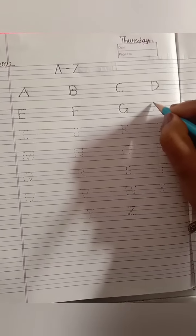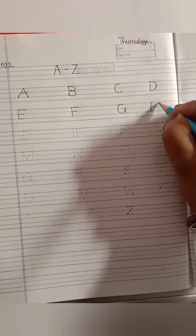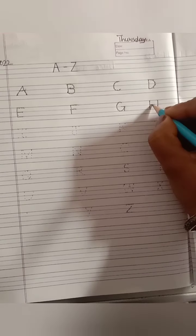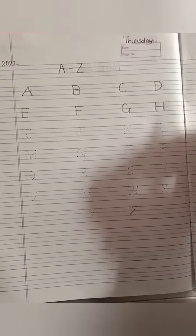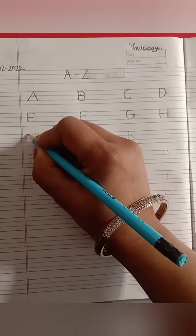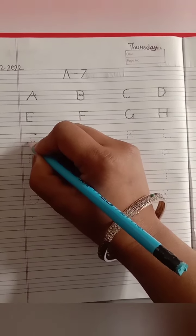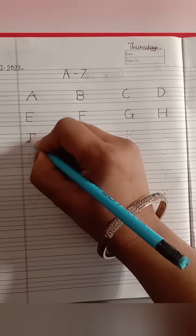Next, letter H. One standing line, standing line, sleeping line. H says huh. I. I says e. Letter I.